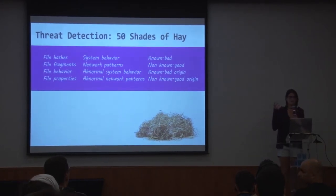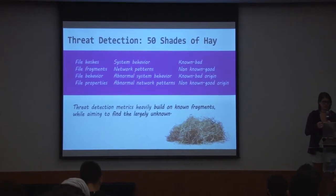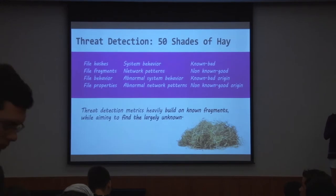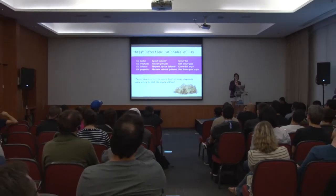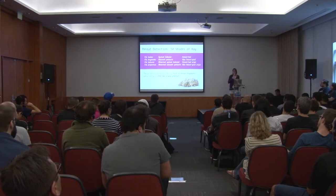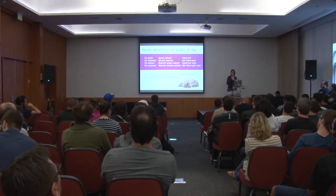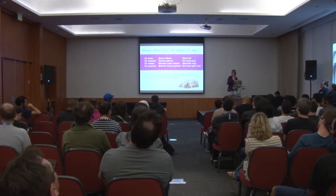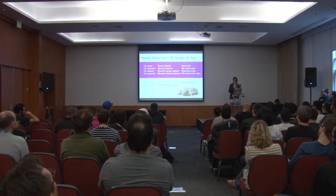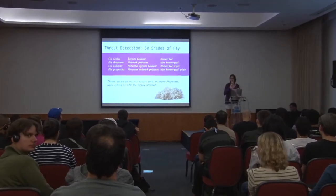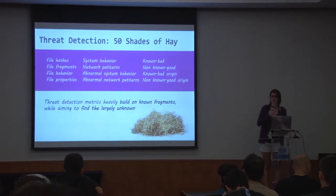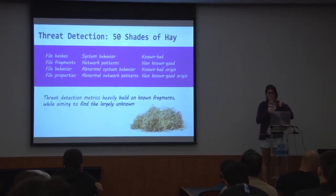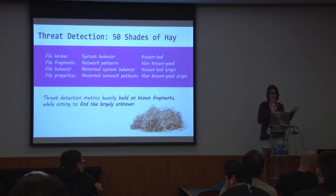It's all data that suffers from the same problem — it heavily relies on known fragments. We need a file to create a file hash to detect that file, or we need the actual behavior to search for on a system or in the network stream we're scanning. This all tries to find largely unknown pieces. Threats and threat actors do reuse code and techniques, but the mass malware market relies on changing patterns consistently to evade detection, which is based on repetitive fragments. In my opinion, the metrics we're using aren't smart enough to adapt to the changing binary surface we try to detect.